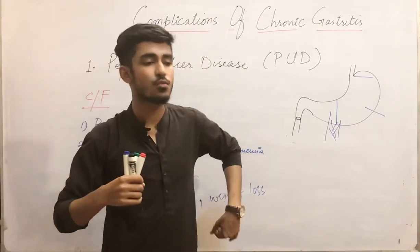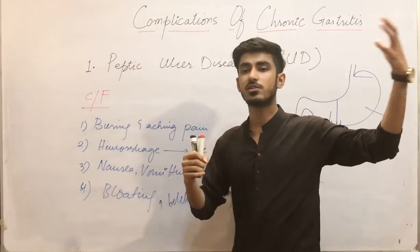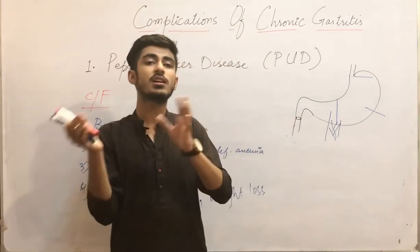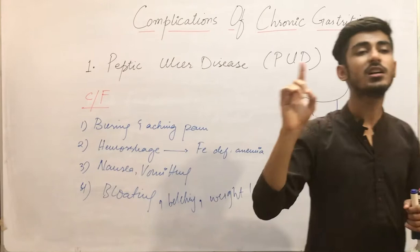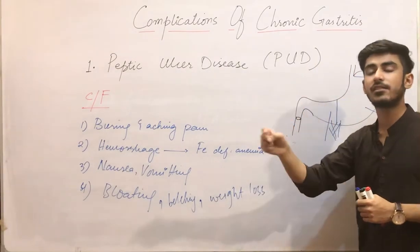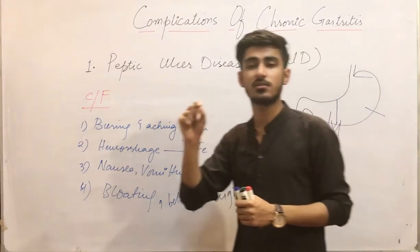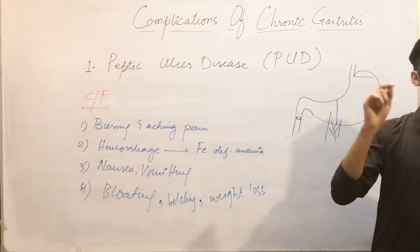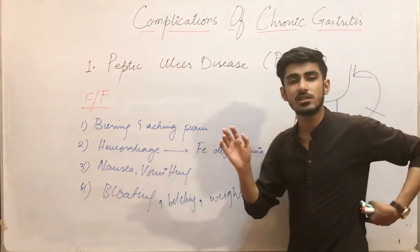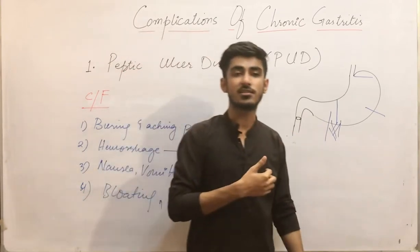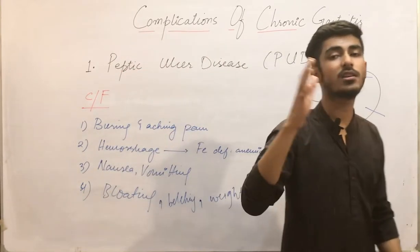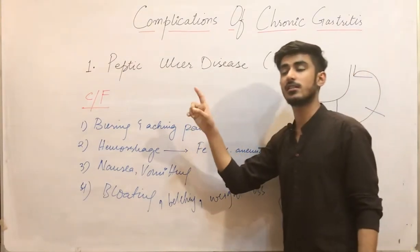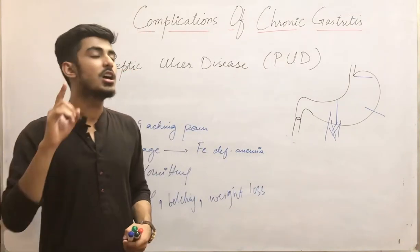The pain from penetrating ulcers is localized toward the back, the left arm, and the chest region. This pain may be confused with cardiac pain, but it is not cardiac — it is due to the penetrating ulcer. This is an important point: penetrating ulcers can cause pain in the back, left arm, and chest, which may be misdiagnosed as cardiac disease.